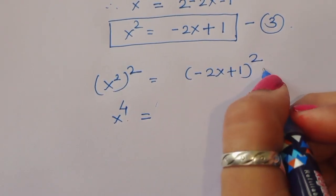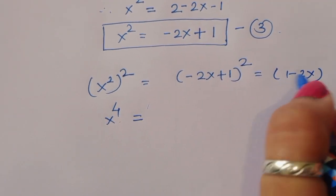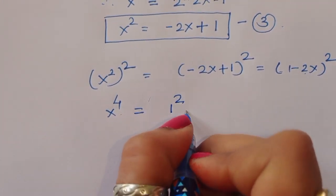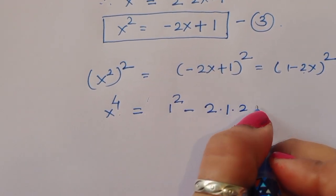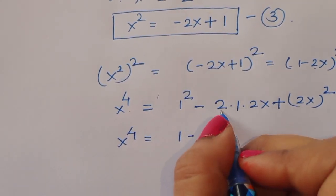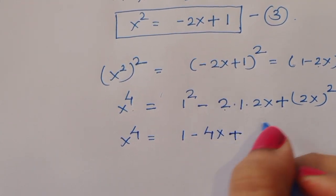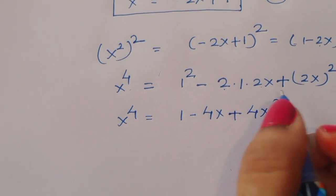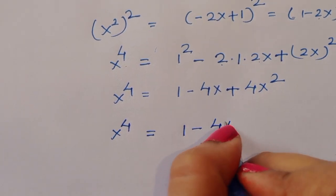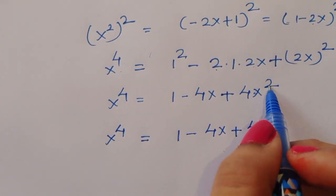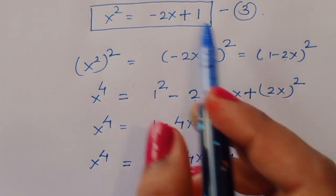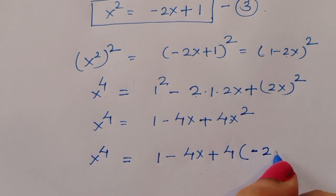Using the formula (a - b)² = a² - 2ab + b², we get x⁴ = 1 - 4x + 4x². Substituting x² = 1 - 2x from equation 3, we get x⁴ = 1 - 4x + 4(1 - 2x), which gives x⁴ = 1 - 4x - 8x + 4.